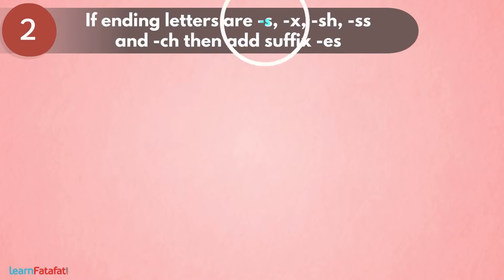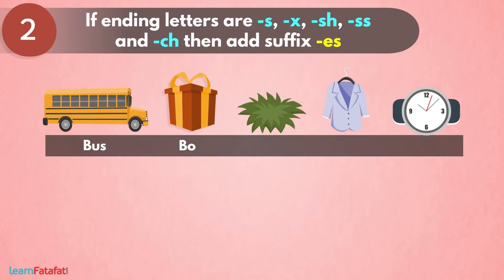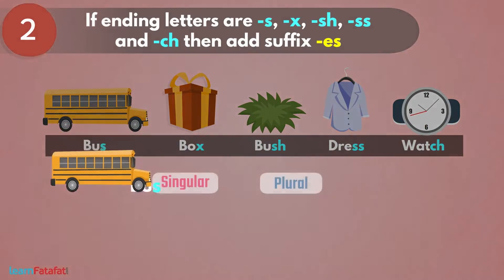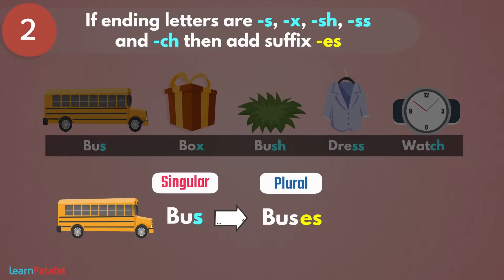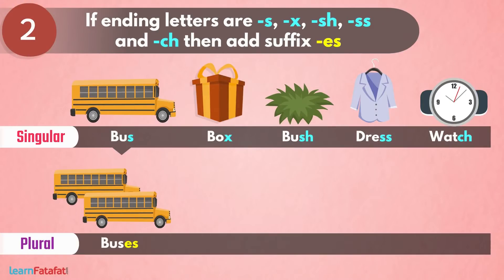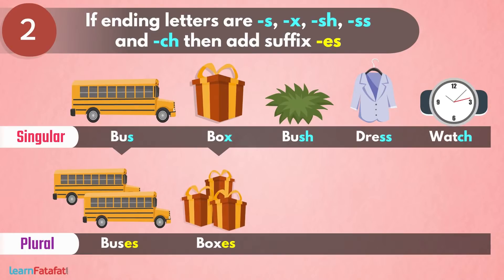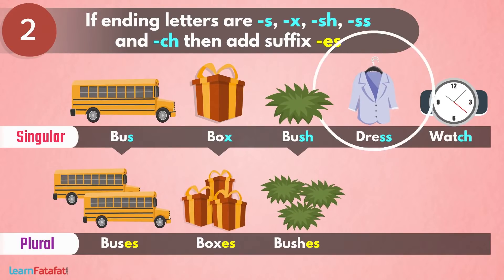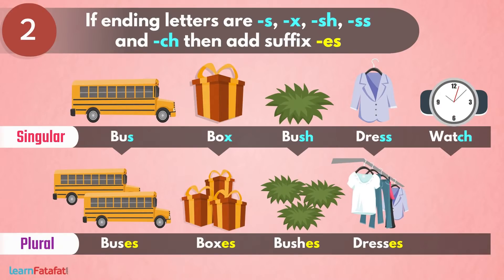If ending letters are -s, -x, -sh, -ss, and -ch, then add suffix -es. कुछ word जैसे bus, box, bush, dress, watch के अंत में s, x, sh, ss, और ch इनमें से कोई letter आता है तो plural बनाने के लिए -es suffix किया जाता है। तो bus से बना buses, box से बना boxes, bush से बना bushes, dress से बना dresses, watch से बना watches।